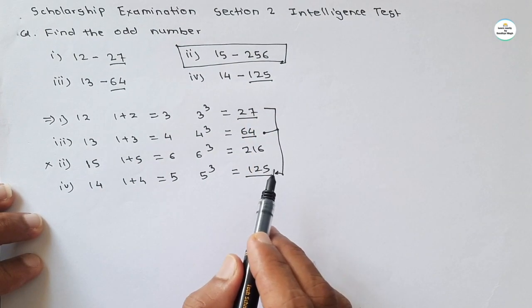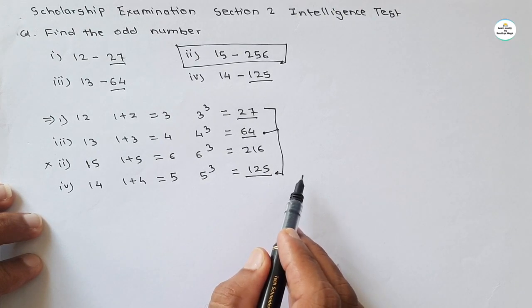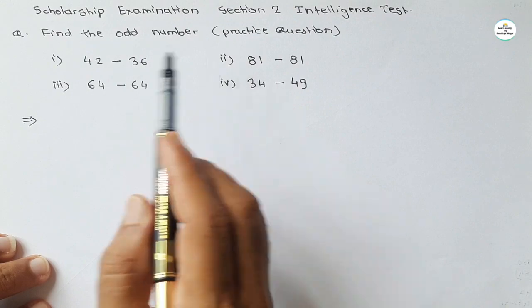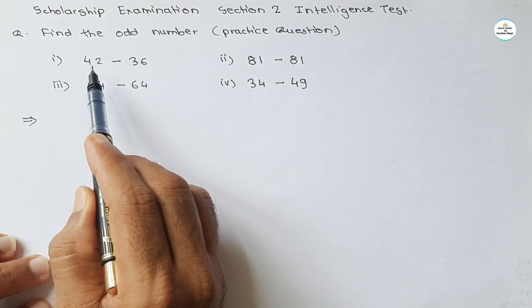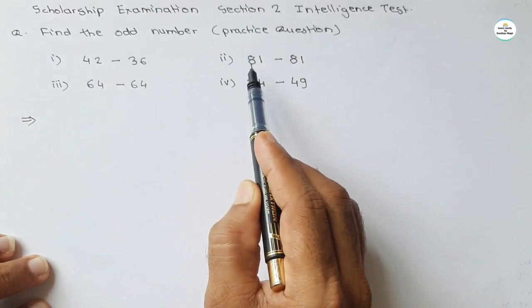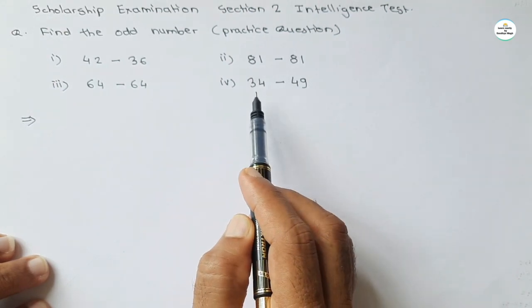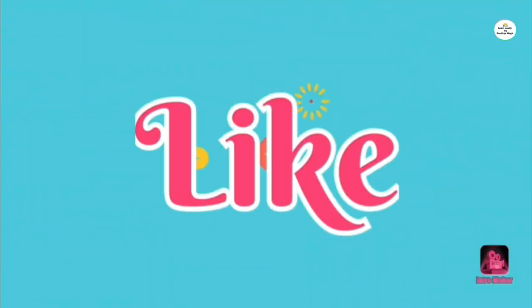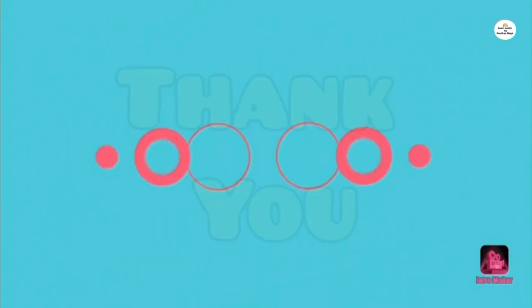As usual, there is a practice question for you — try to answer in the comment section and I will give the solution in the next video. The practice question is: find the odd number from these four groups — 42–36, 64–64, 81–81, and 34–49. That's all for this video. We will meet again in the next video. Do learn, do enjoy — thank you!